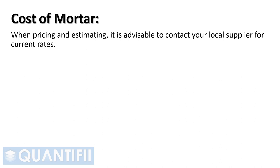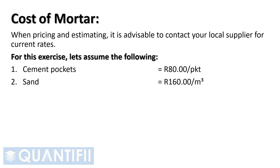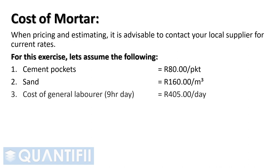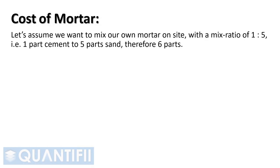To tender accurately, contact your local suppliers for current rates and substitute your local currency into the analysis. For this exercise, let's use the South African rand and assume the following: cement pockets at 80 rand per pocket; sand at 160 rand per cubic meter; cost of a general laborer for a 9-hour workday at 405 rand per day, which includes 1 hour's paid lunch. Let's assume we want to mix our own mortar on site, with a mix ratio of 1 to 5, that is 1 part cement to 5 parts sand, therefore 6 parts.